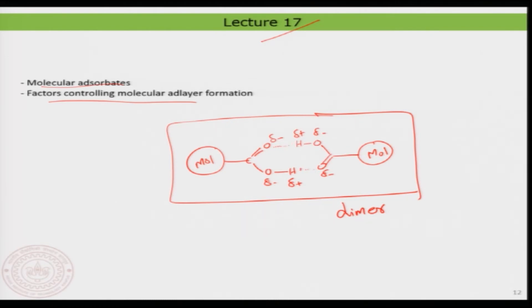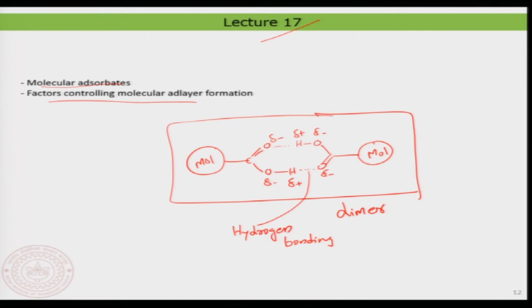The dotted lines represent hydrogen bonding, which is generally a non-covalent interaction. Interactions are very important — what type of interactions bring the molecules together is a key element in molecular assembly itself.